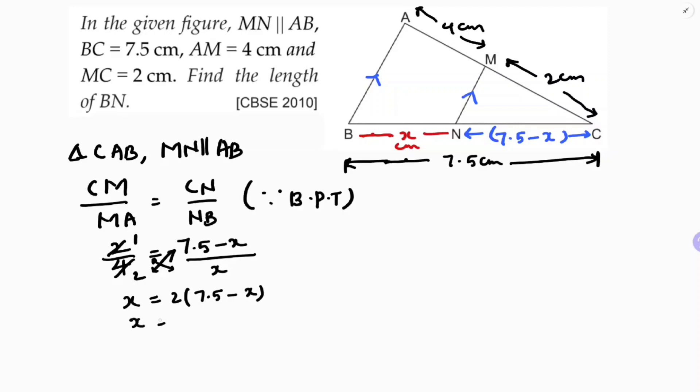So x equals 15 minus 2x. Transferring 2x to the left side: x plus 2x equals 15, so 3x equals 15. Therefore x equals 15 by 3, which is 5 cm. So BN length is 5 centimeters.